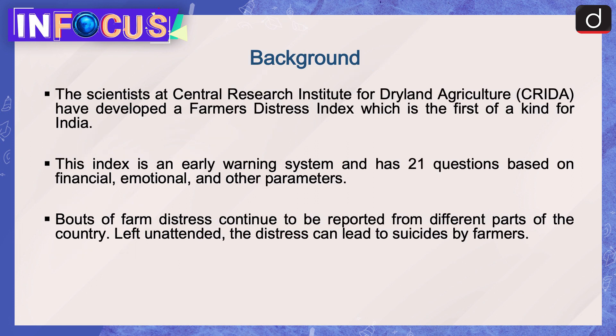Moving on to the background of the news: scientists at the Central Research Institute for Dryland Agriculture have developed a Farmer's Distress Index, which is the first of its kind for India. This index is an early warning system and has 21 questions based on financial, emotional and other parameters. Bouts of farm distress continue to be reported from different parts of the country, and left unattended, the distress can lead to suicides by farmers.